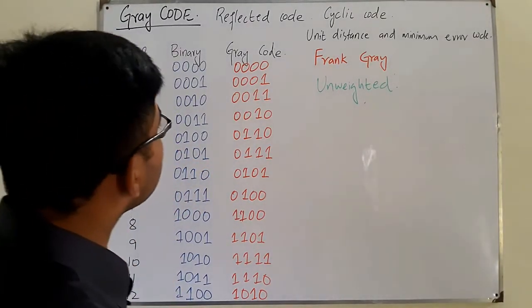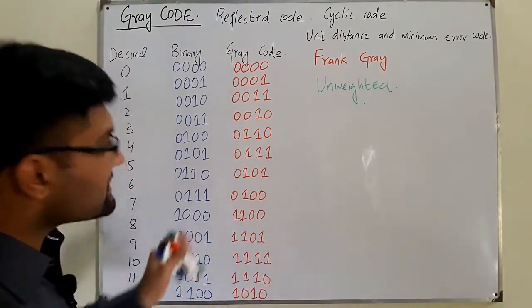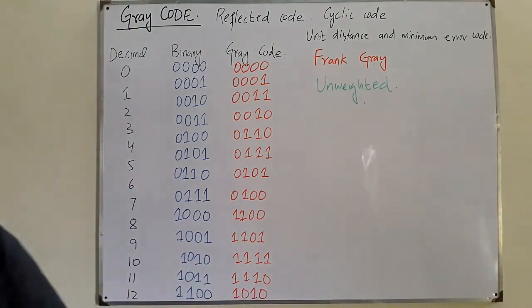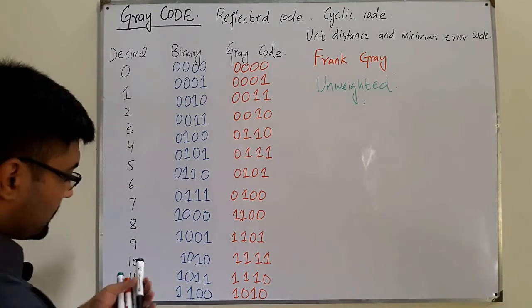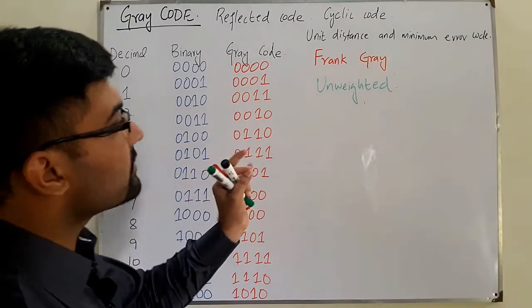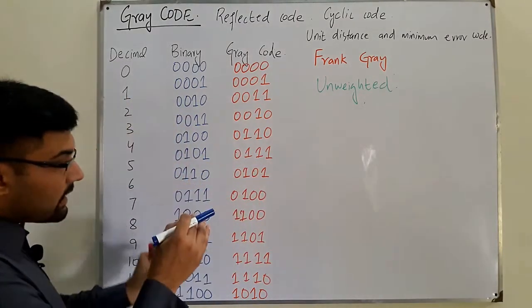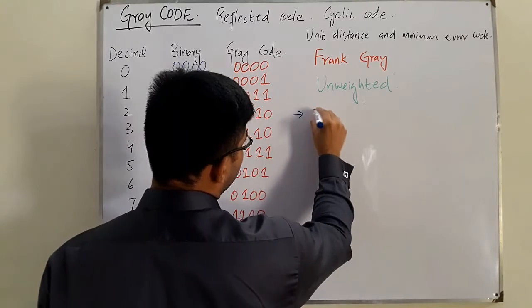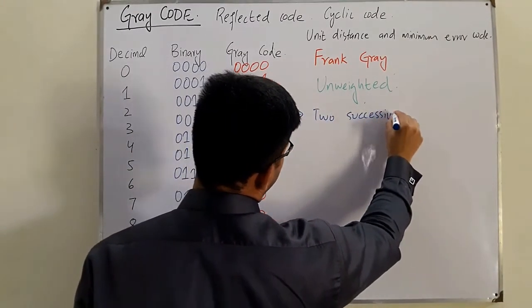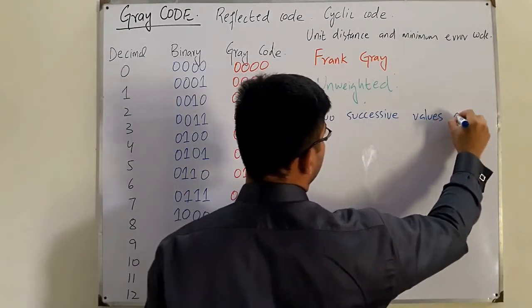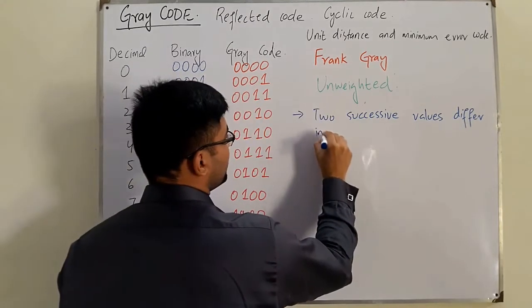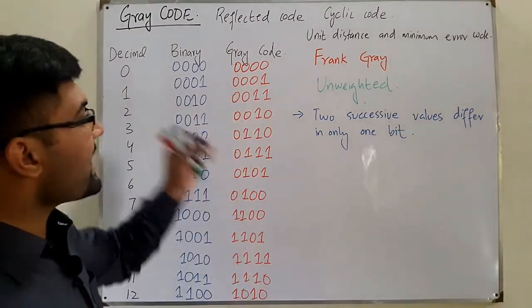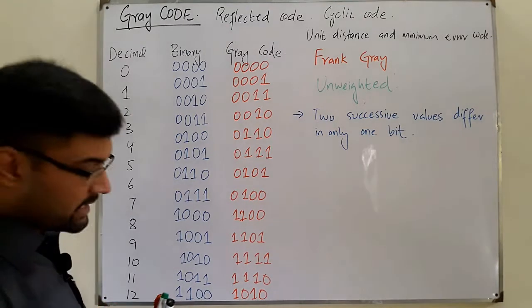Gray code is a binary numeral system in which any two successive values differ in only one bit.